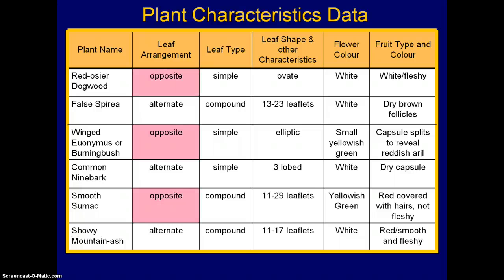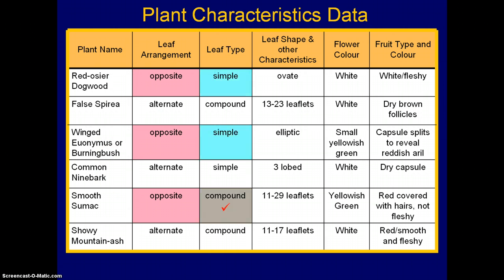Looking from left to right, we start with leaf arrangement. Of the six species, three have opposite leaves and three have alternate leaves, giving us two groups immediately. To differentiate the three species with opposite leaves, we go to leaf type. Two have simple leaves and one has compound leaves, so we've found one plant with opposite compound leaves — it's already differentiated from the others. We don't have to go any further for that one when building the key.